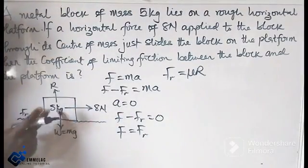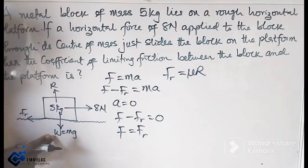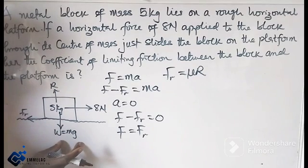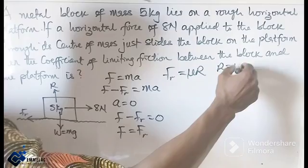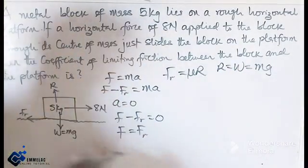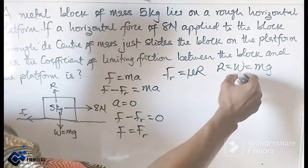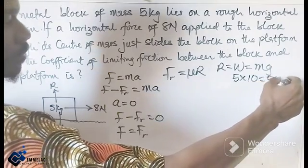And for this vertical component, the reaction is equals to the weight. And by this we can say that reaction equals to the weight which is given as mg. And with this the mass of the block is 5 times acceleration which will give us 50 N.